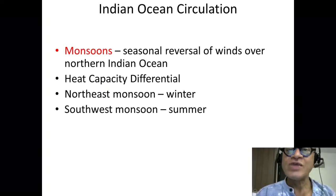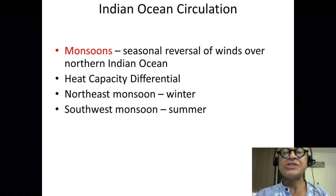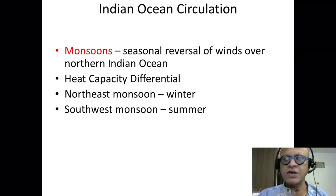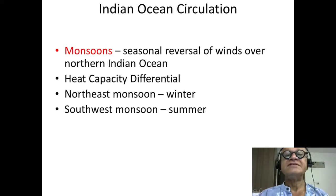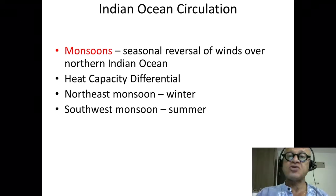Here we are in the Indian Ocean to look at the monsoon circulation. Monsoons, as I think we have mentioned before, comes from 'mausum,' which is an Arabic word for season. The Arabs were the earliest ones to figure out that seasonally the winds change.